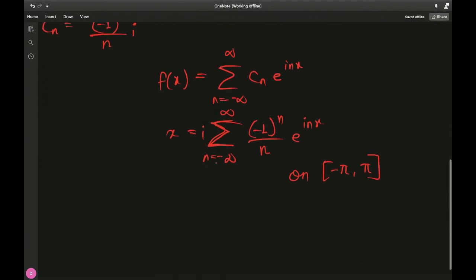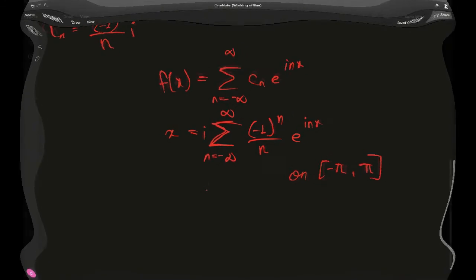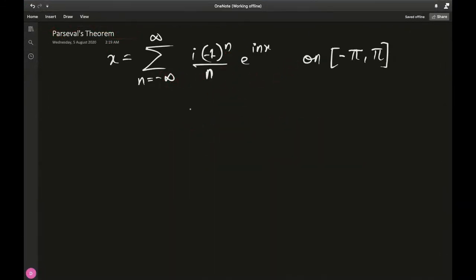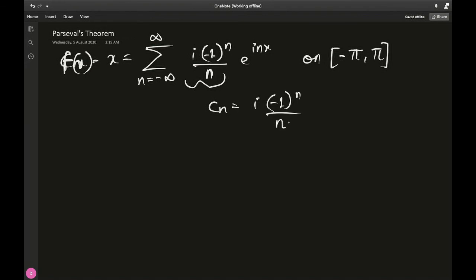Now what do we do with this? We know x can be expressed in that Fourier series, and c_n = i·(−1)^n over n.